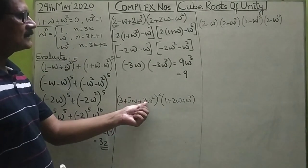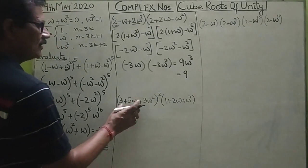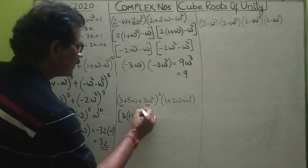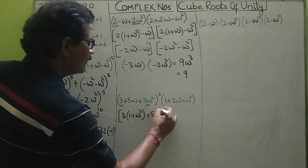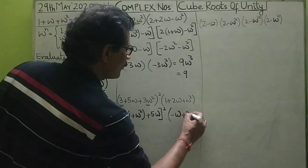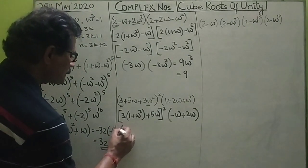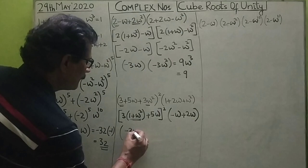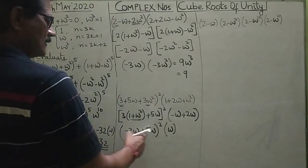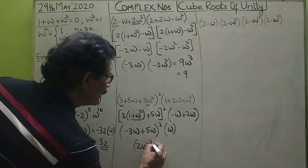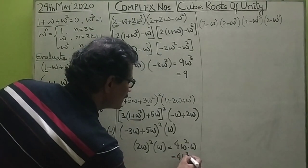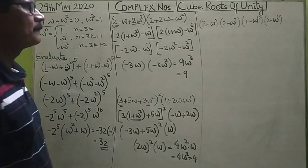The next sum involves (3 plus 3 omega squared)(1 plus 2 omega squared). Taking 3 common from the first expression gives 3(1 plus omega squared), which equals minus 3 omega, and adding 5 omega squared... In the second expression, 1 plus omega squared is minus omega, so minus omega plus 2 omega gives omega. Simplifying further, the first part becomes minus 3 omega and combining with (2 omega) squared times omega gives 4 omega squared times omega, which is 4 omega cubed, equal to 4.